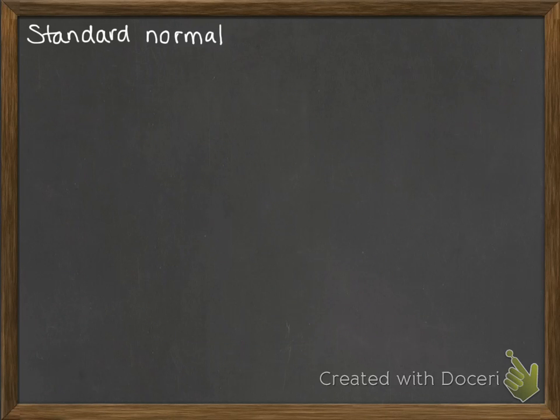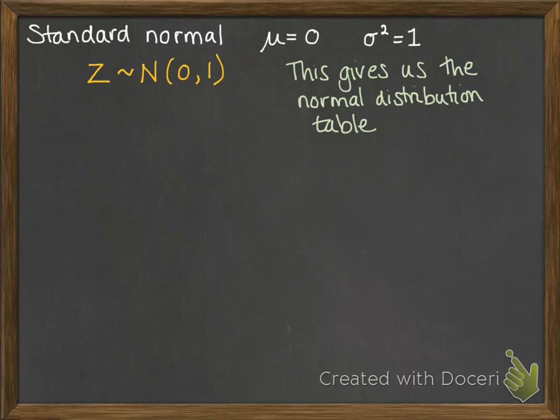Now we're going to start with the standard normal. That's the normal distribution that has a mean of 0 and a variance of 1. So we call it z, and it's denoted like this. Now this gives us the normal distribution table, which you can find on your formula sheet or in the back of your textbook. You'll need to have that to hand for all of the questions on normal distribution.